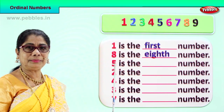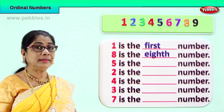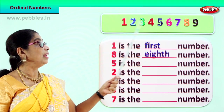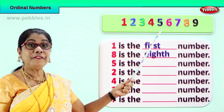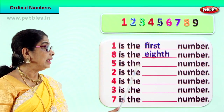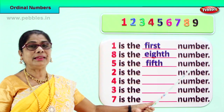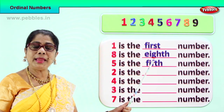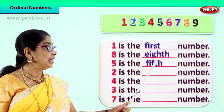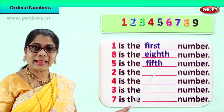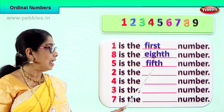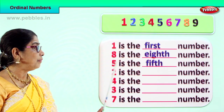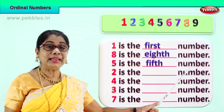Look, we have another number here. Five — let's look at the position. First, second, third, fourth, fifth. Number five is the fifth number. Spell fifth: F-I-F-T-H. Say it again: F-I-F-T-H. Number five is the fifth number.